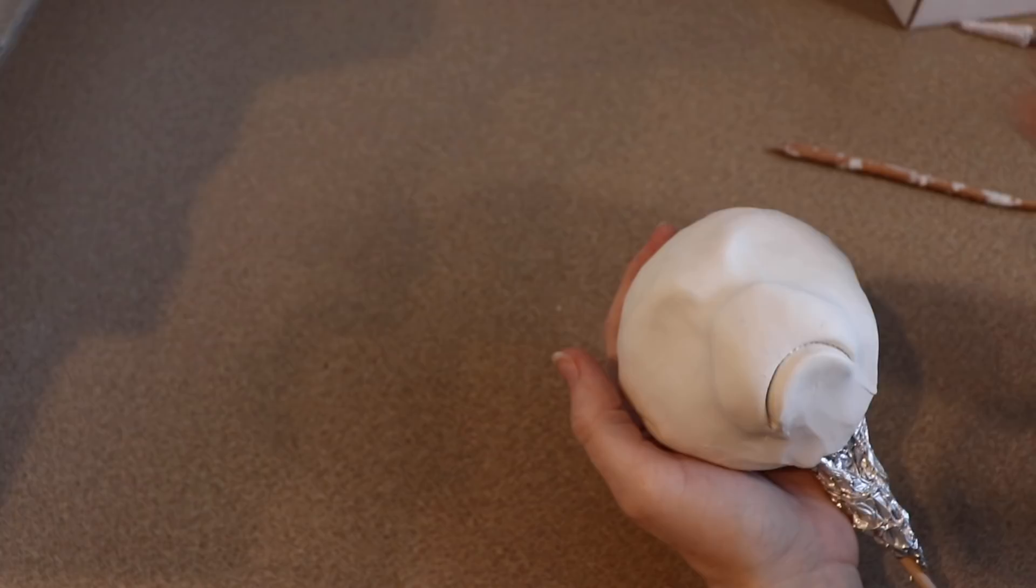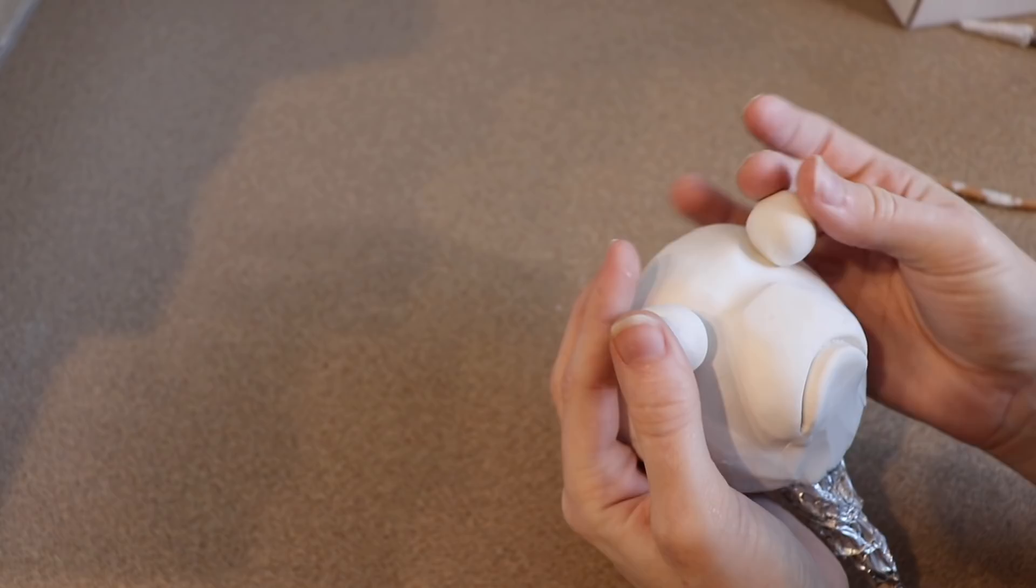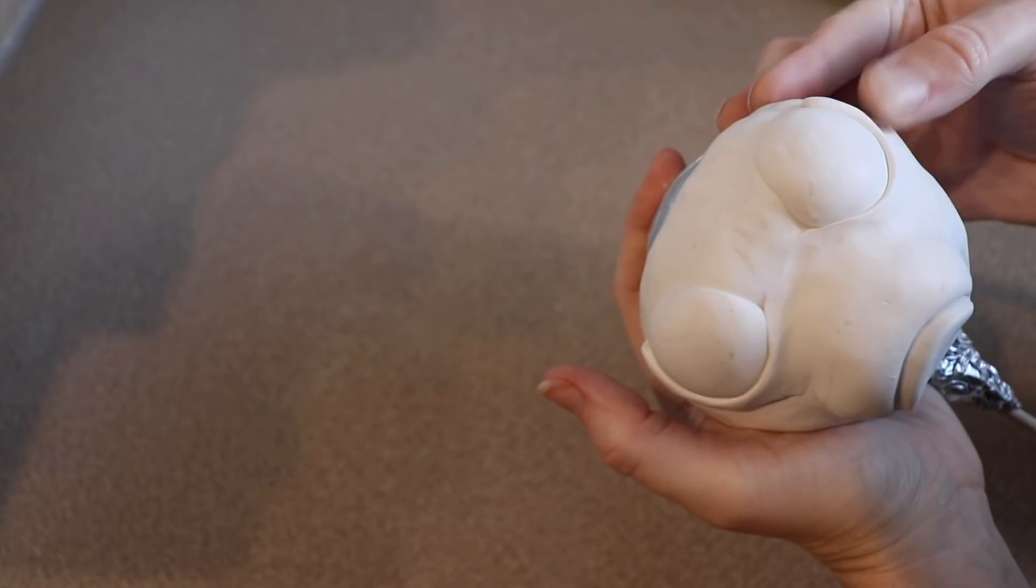After I'm done with the snout, I'm gonna take two big balls of clay, and I'm gonna push them into the face, where I want the eyes to go. After that, I'm gonna put a ring of clay around it to make an eyelid, and I'm really not going to add any more detail to the face, because I'm actually going to cover it all in fur. So the only bare clay you're going to see after I'm done with it is going to be the eyes.